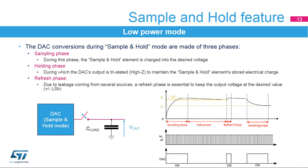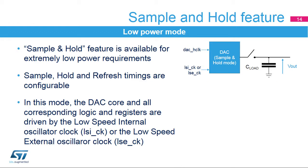After the refresh period, the DAC is powered back on and recharges the hold capacitor. When configured in sample and hold mode, the DAC generates its converted output voltage and active circuitry can be turned off. In this mode, the DAC core and all corresponding logic and registers are driven by the LSI or LSE clock, in addition to the DACH clock, allowing usage of the DAC channels in deep low power modes such as stop mode. The logic scheduling refreshes only requires the LSI or LSE clock, so the DAC is only active during very low duty cycles — sample and refresh — resulting in very low power consumption. The duty cycle program is very flexible and autonomous.